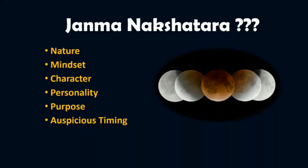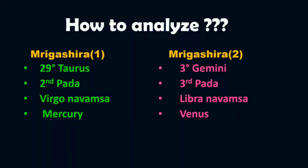Nakshatras placed fifth and ninth from your janma nakshatra are auspicious nakshatras. Whenever the moon is placed in these nakshatras, those days will be auspicious for starting new projects. Whenever the moon is present in the third, sixth, or eighth nakshatra away from your janma nakshatra, those days will not be considered auspicious for beginning new things.